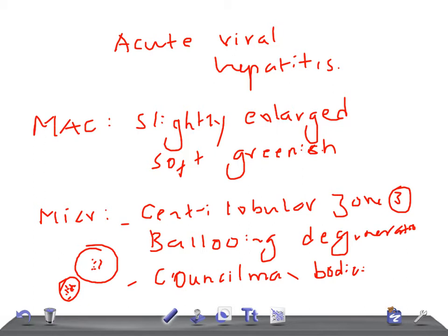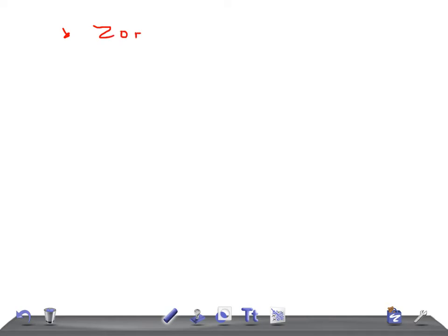Some areas can also show drop out necrosis, in which you see isolated or small clusters of hepatocytes that undergo lysis. Other features seen on microscopic examination include mononuclear inflammatory cell infiltrate in zone 1, the portal triad, and reactive hyperplasia of Kupffer cells.